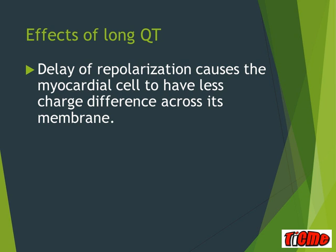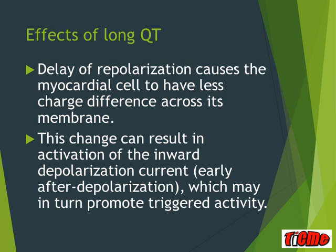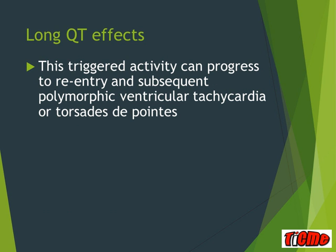That delay in repolarization causes the myocardial cell to have less charge difference across its membrane. This activates an inward depolarization current, known as an early afterdepolarization, which can promote triggered activity. That triggered activity can progress to polymorphic VT, and when associated with a long QT, is called torsade de pointes.